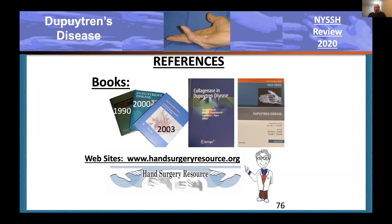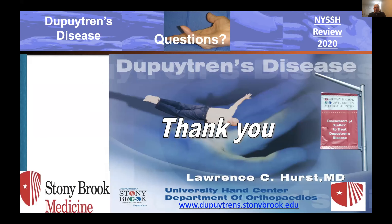Here are some textbooks you can use for references. Our website at handsurgeryresource.org has a whole section on Dupuytren's as well as all the other topics we're covering today. Thank you for your attention.